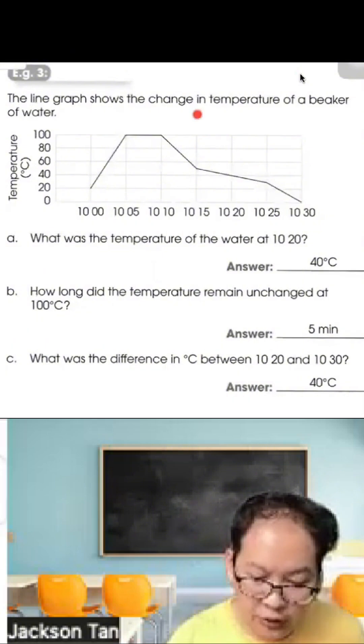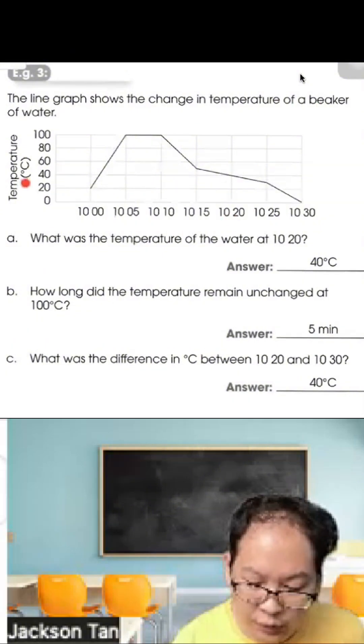Example 3. The line graph shows the change in temperature of a beaker of water. At 10:20 it is 40 degrees Celsius.